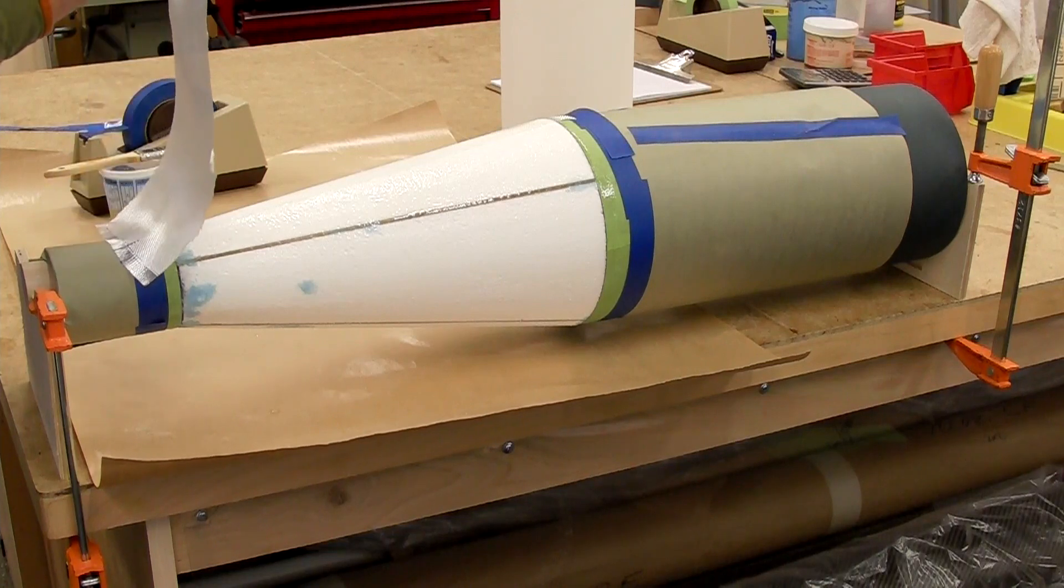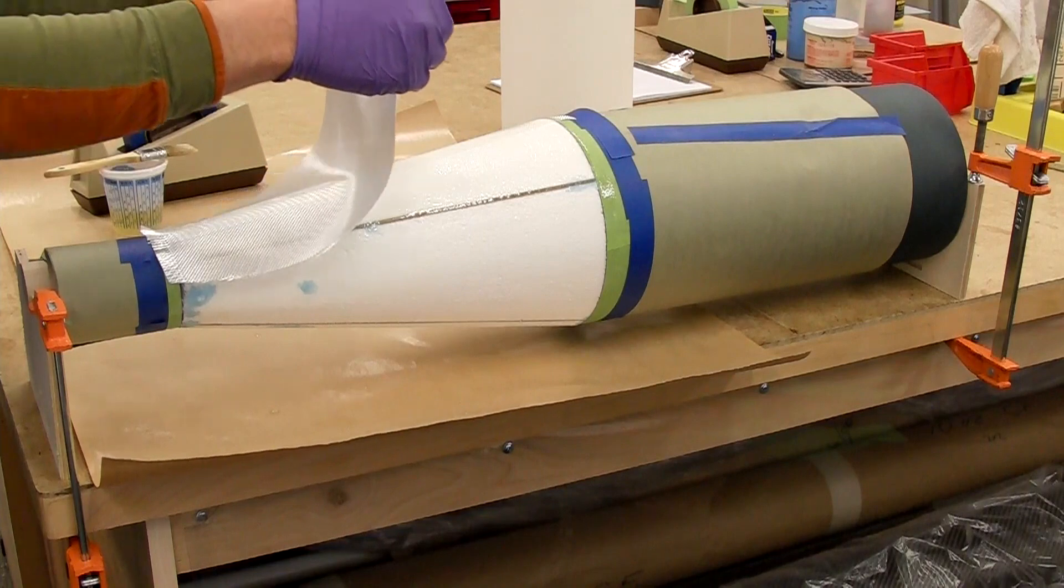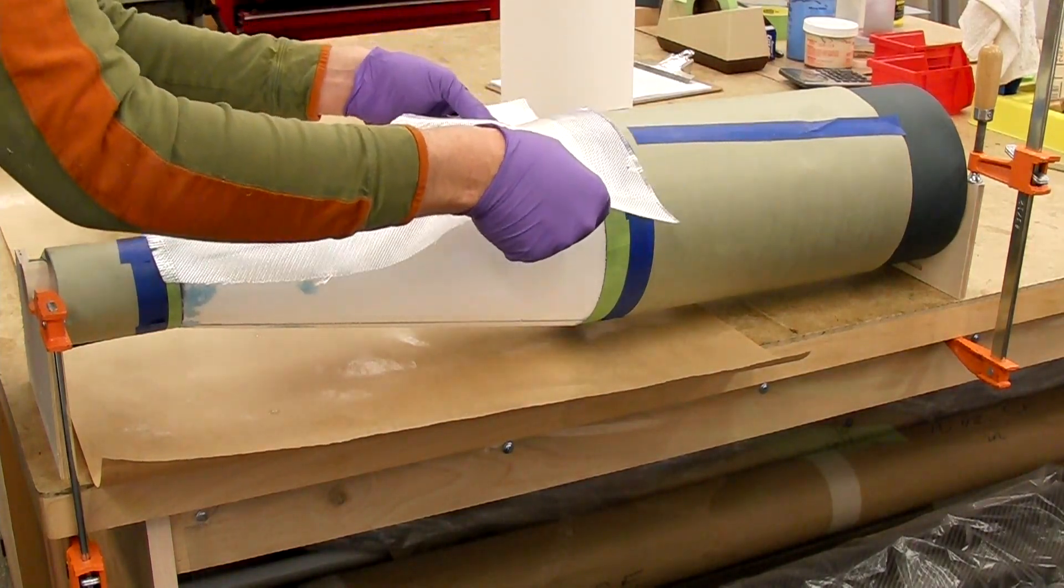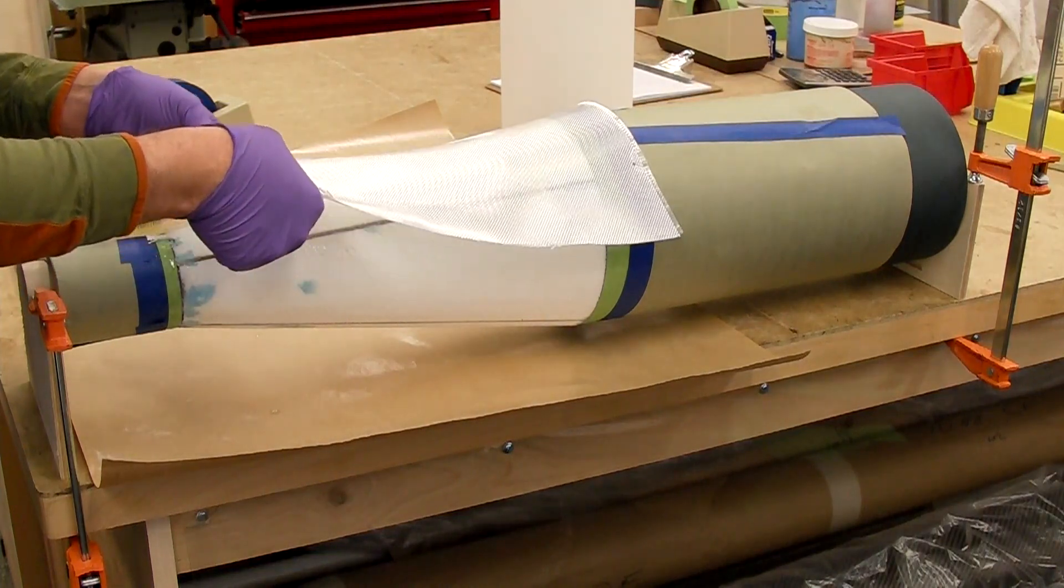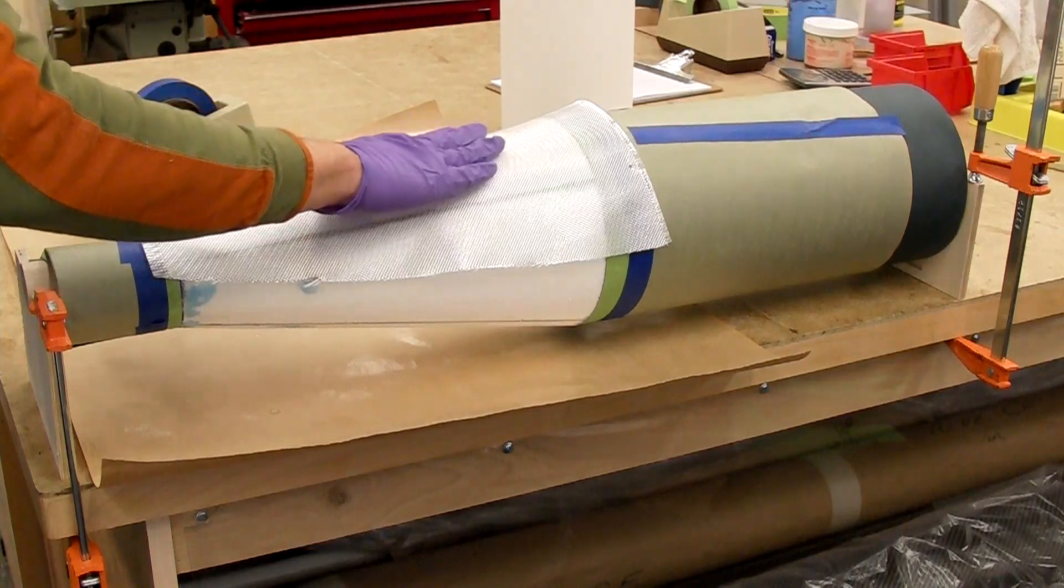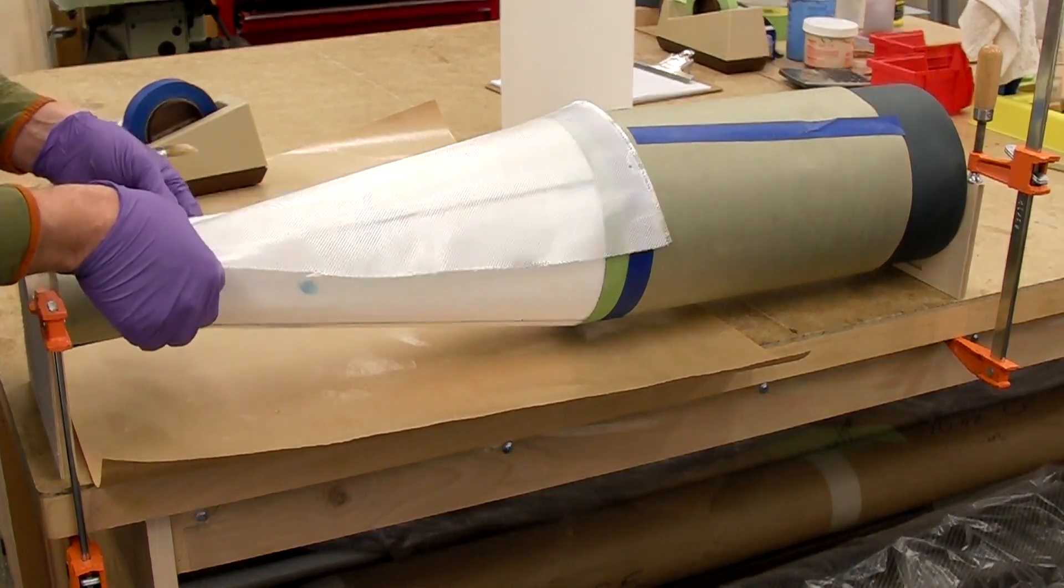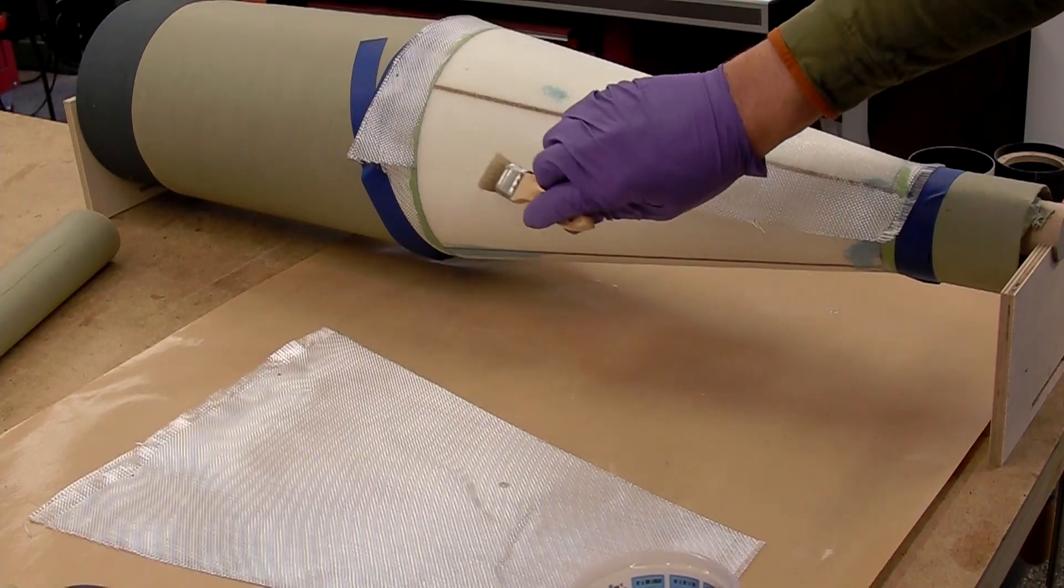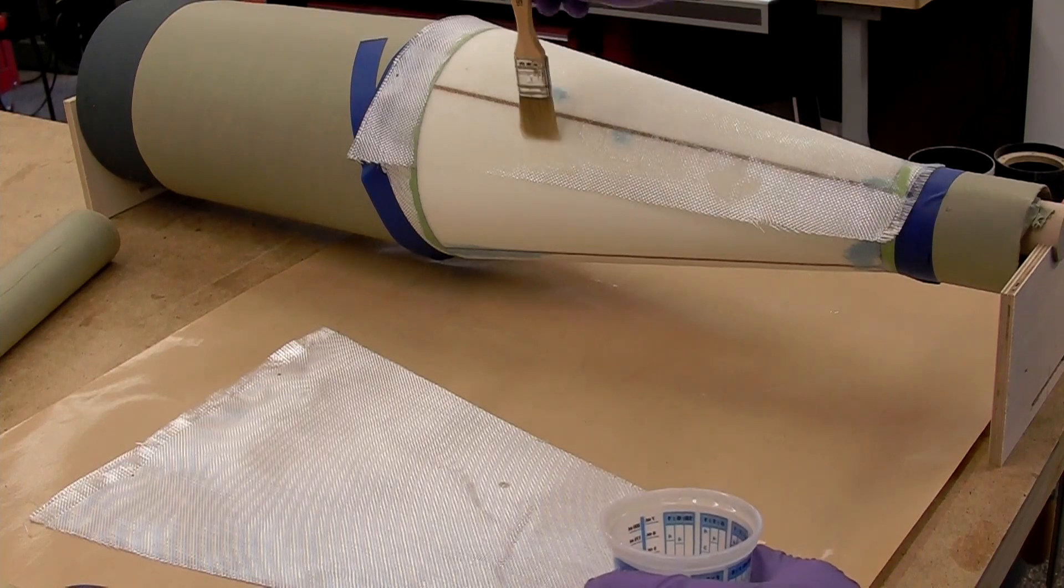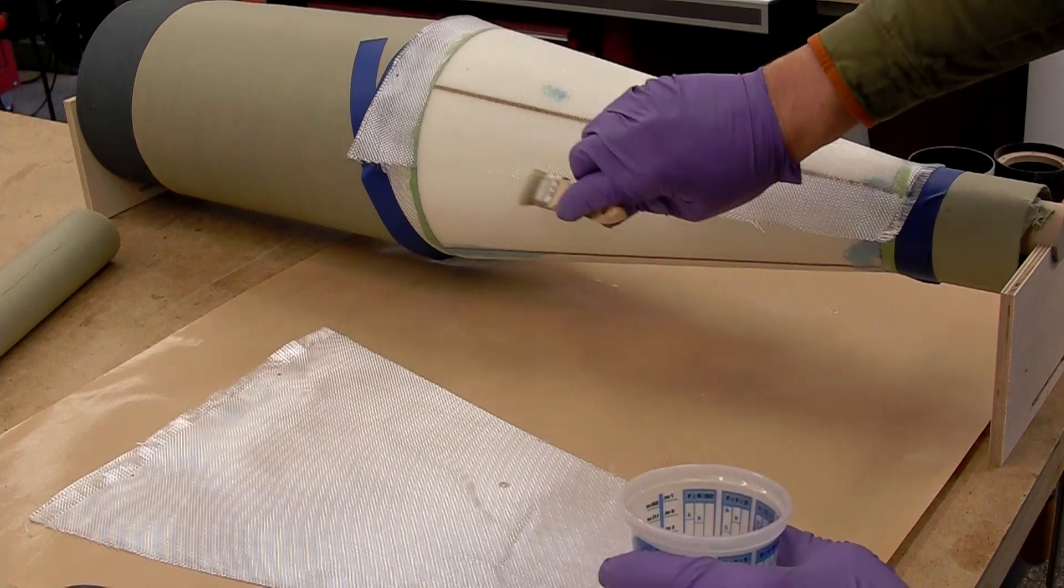Second piece of cloth applied just like the first, smoothed out, and then the wet out completed. Be very careful at the edges. Cut fiberglass cloth can come apart very easily, so you want to get it fully saturated, but not tear out the fibers.